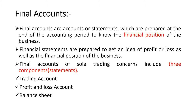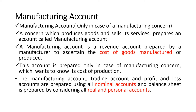In the case of a trading concern, they prepare three statements. But in the case of a manufacturing concern — if a person is running a manufacturing concern — then one more account we have to prepare, that is the manufacturing account, where we have to take the expenses relating to manufacturing as well as income relating to manufacturing. A concern which produces goods and sells its services prepares an account called manufacturing account, prepared by a manufacturer or trader who produces goods and sells its services.